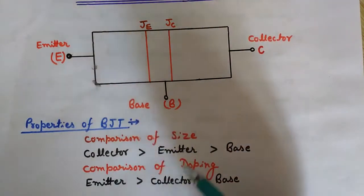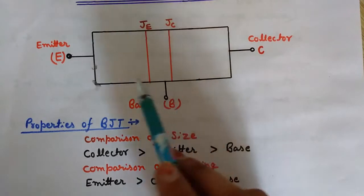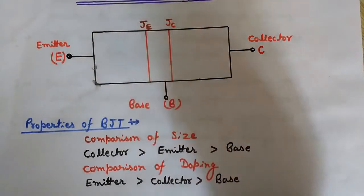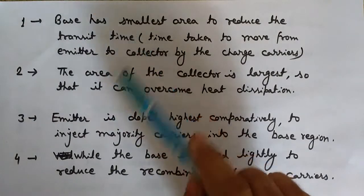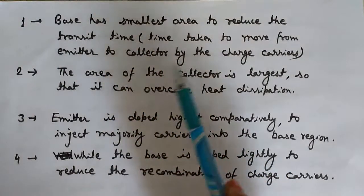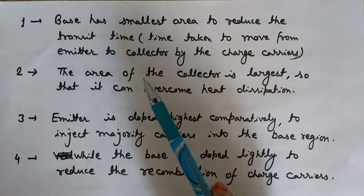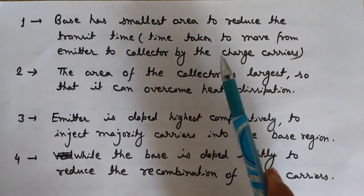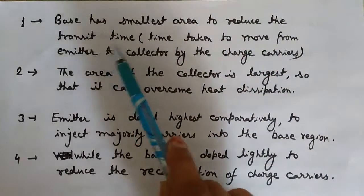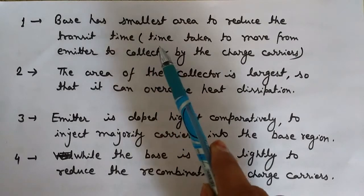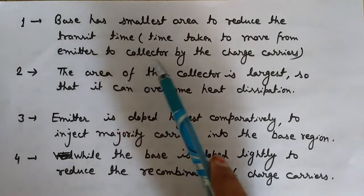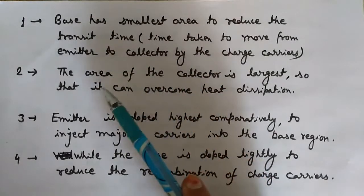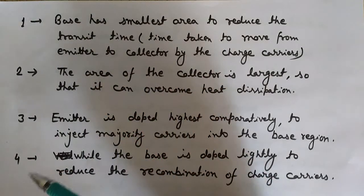Now we will discuss why the sizes are varied and why the doping is different in all three regions. The size of the base region is the smallest in comparison to the emitter and collector region. The reason behind this is to reduce the transit time — the transit time being the time taken to move the emitter charge carriers to the collector region.